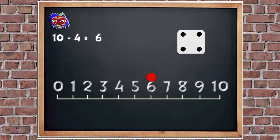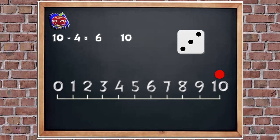Let's have another go. Start on 10 — put that in our number sentence — then roll the dice. How many do we need to take away? Three. So let's put that in our number sentence. We need to move back three — but we need to jump first, don't forget that. One, two, three. What did we land on? Number seven. So 10 take away three equals seven.